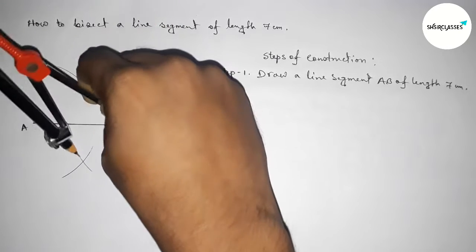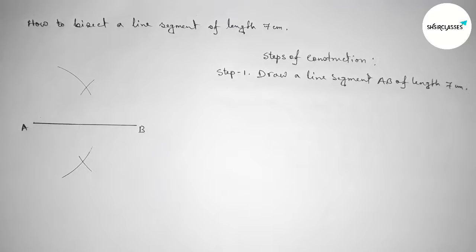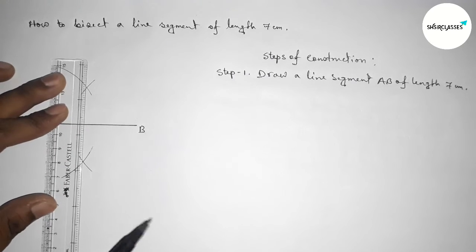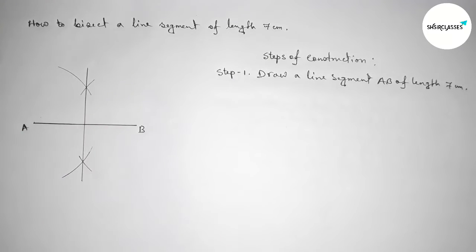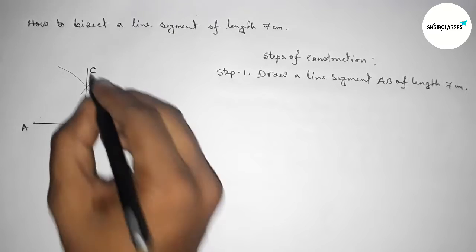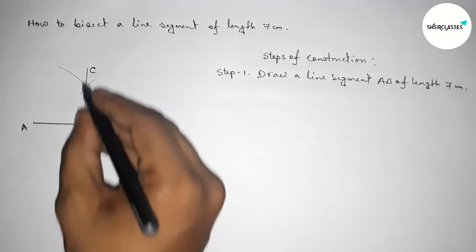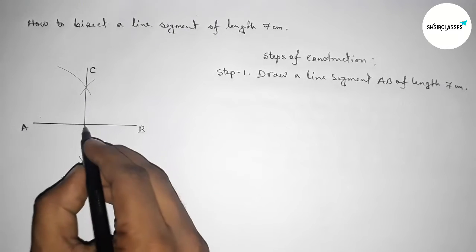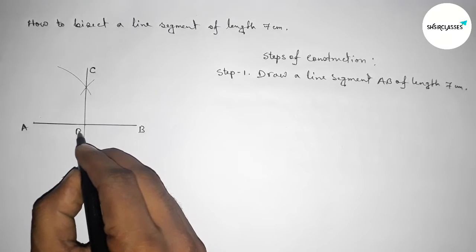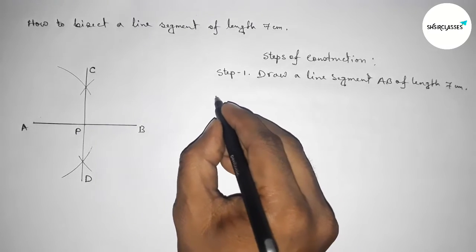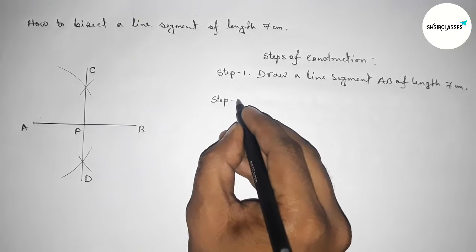So now joining this line. Taking here point C and here D, so the line CD bisects the line AB here at the point P. So now step number two.